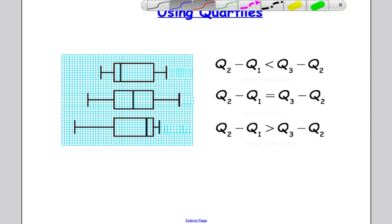So Q2 minus Q1, if we subtract them and we get a value that is smaller than Q3 subtract Q2, that tells me that it's positively skewed because it tails off in the positive direction.